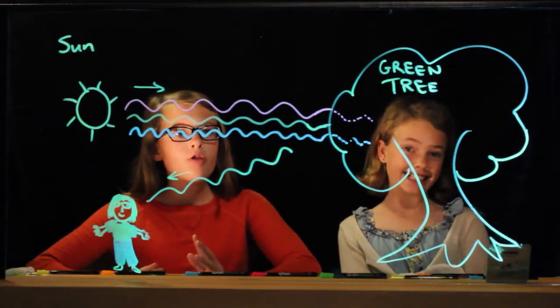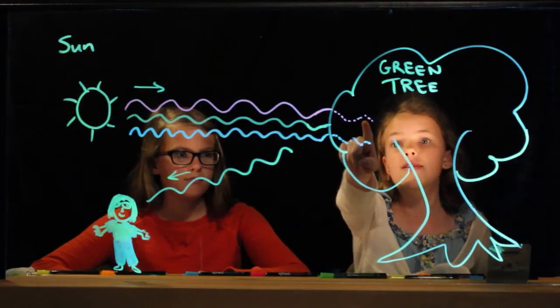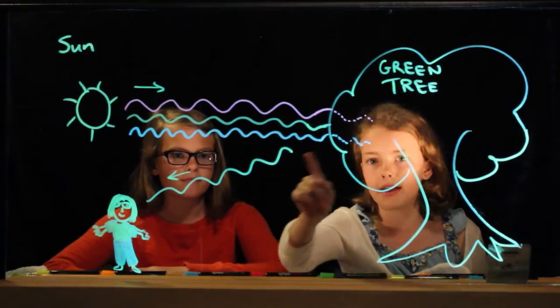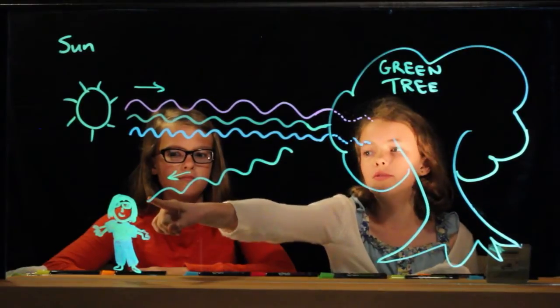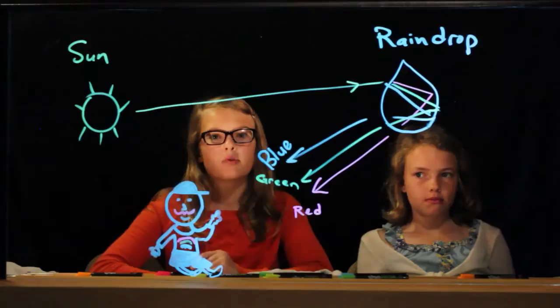Oh, I get it. The sun emits all the colors. The tree, the green leaves, absorb the red light and the blue light. The green light is reflected by the leaves. And this is what you observe as green.